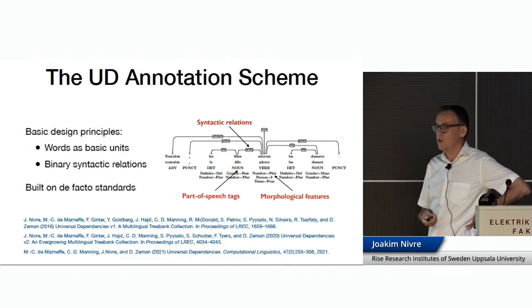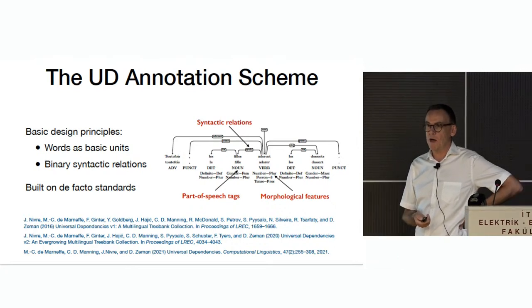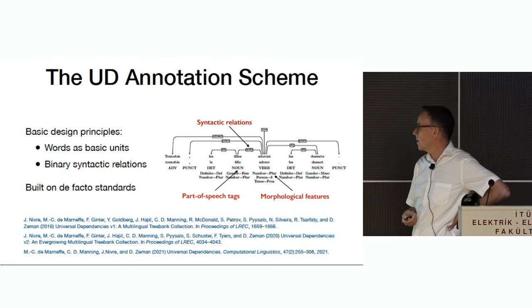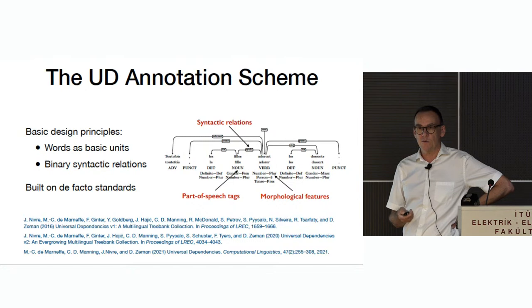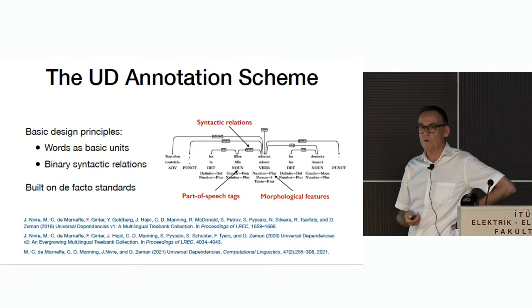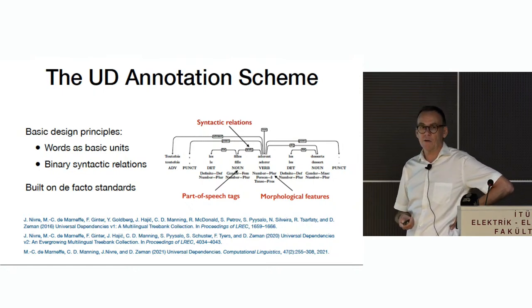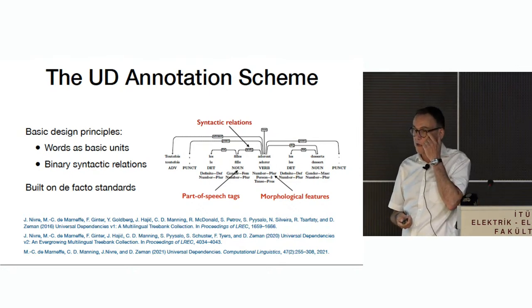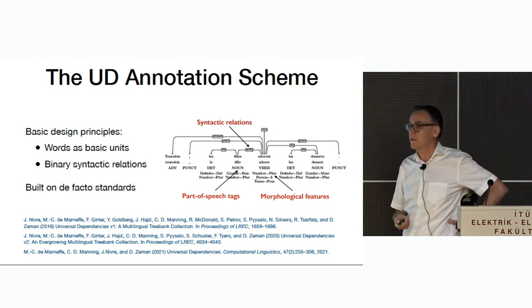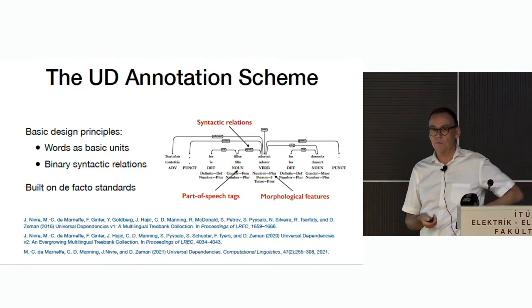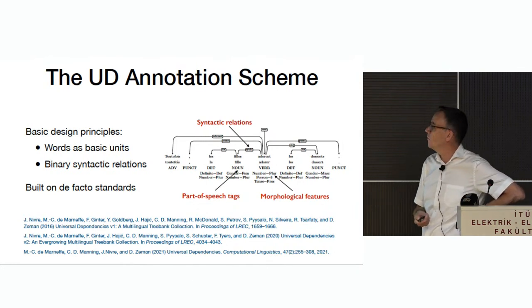An important decision at the start of the project was to not start from scratch, but try to build on existing de facto standards at the time. The part-of-speech tagset is derived from the Google universal part-of-speech tagset, the system of morphological features is based on the inter-set interlingua developed in Prague, and the taxonomy of syntactic relations is inherited from the Stanford-type dependencies, although all have been revised in various ways. With hindsight, this was a wise decision and has contributed to the wide acceptance of the framework.